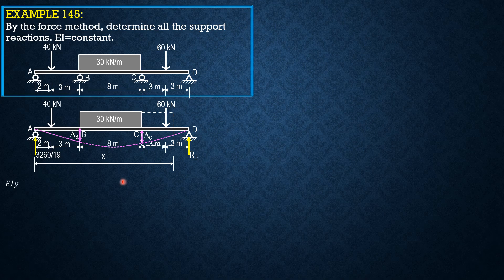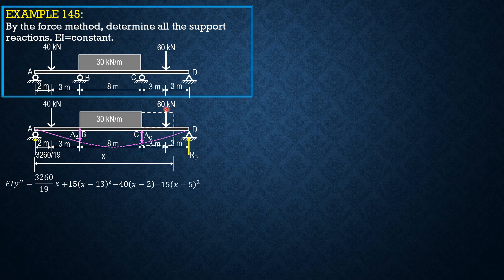So that's Rx. Therefore, EI·y'' equals (3260/19)x minus 40 times (x minus 2), plus 30 times (x minus 13) with moment arm (x minus 13)/2, giving plus 15(x minus 13)², then minus 40(x minus 2), then minus 15(x minus 5)², then minus 60(x minus [16]).